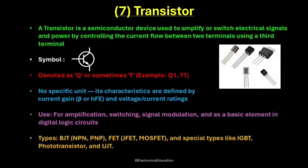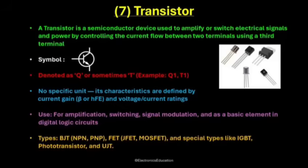Now let's talk about one of the most powerful inventions in electronics: the transistor. A transistor is a semiconductor device used to amplify or switch electrical signals and power. It works by controlling the flow of current between two terminals using a third terminal. In simple words, it can make weak signals stronger or act like an electronic switch. The symbol depends on its type. For a BJT, or bipolar junction transistor, the symbol shows three terminals: the base, collector, and emitter. For a FET, or field effect transistor, the terminals are called gate, drain, and source. Transistors are labeled with the letter Q or sometimes T — for example, Q1 or T1. There's no specific unit; its performance is described by current gain, often called beta, and by its voltage and current ratings.